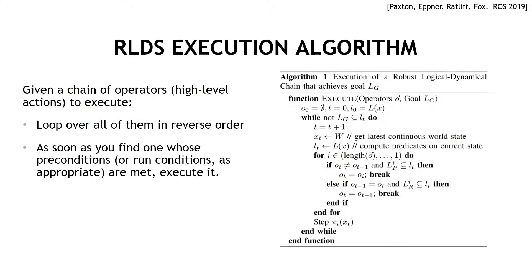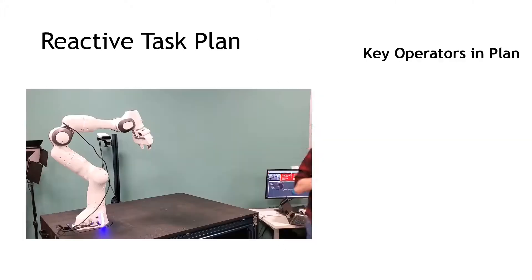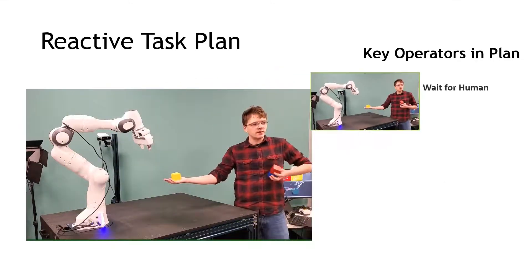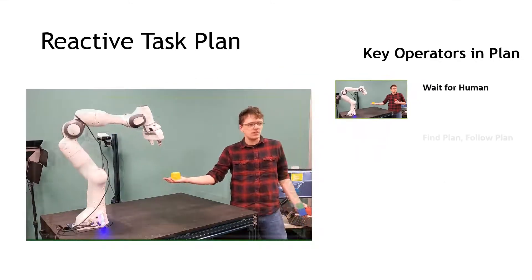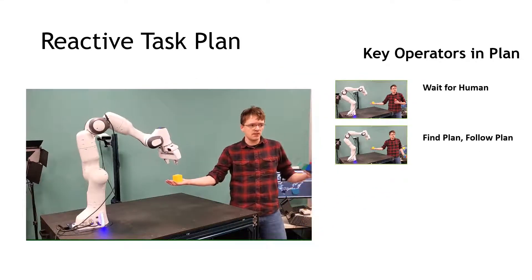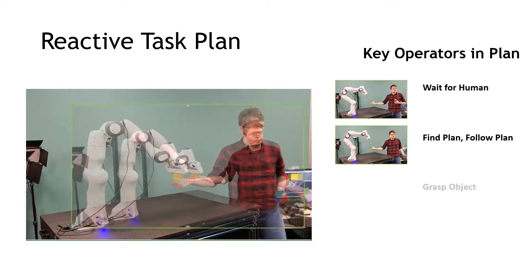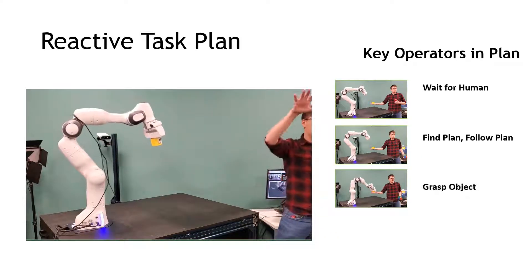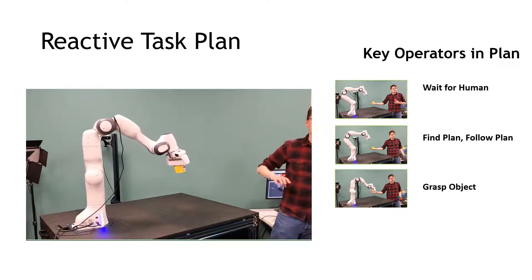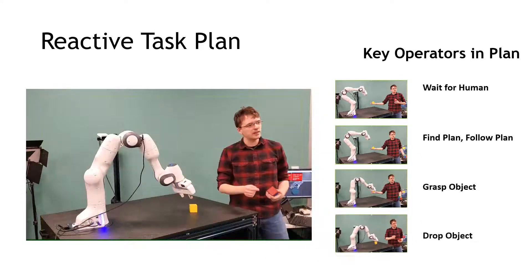The execution algorithm that falls out of this is fairly simple. Given a chain of operators, we loop over all of them in reverse order, and as soon as we find one whose preconditions or run conditions are met, we execute it. In our case, there are four key operators: we can wait for the human, find a plan and execute it, grasp an object, and put it down.